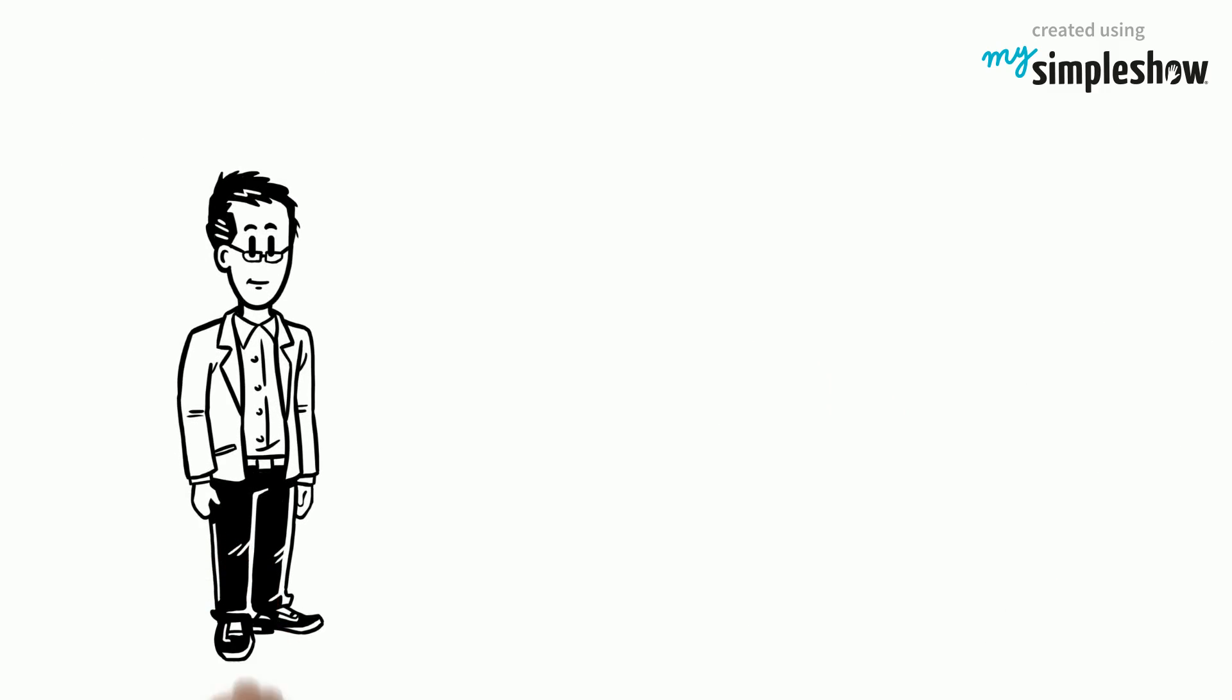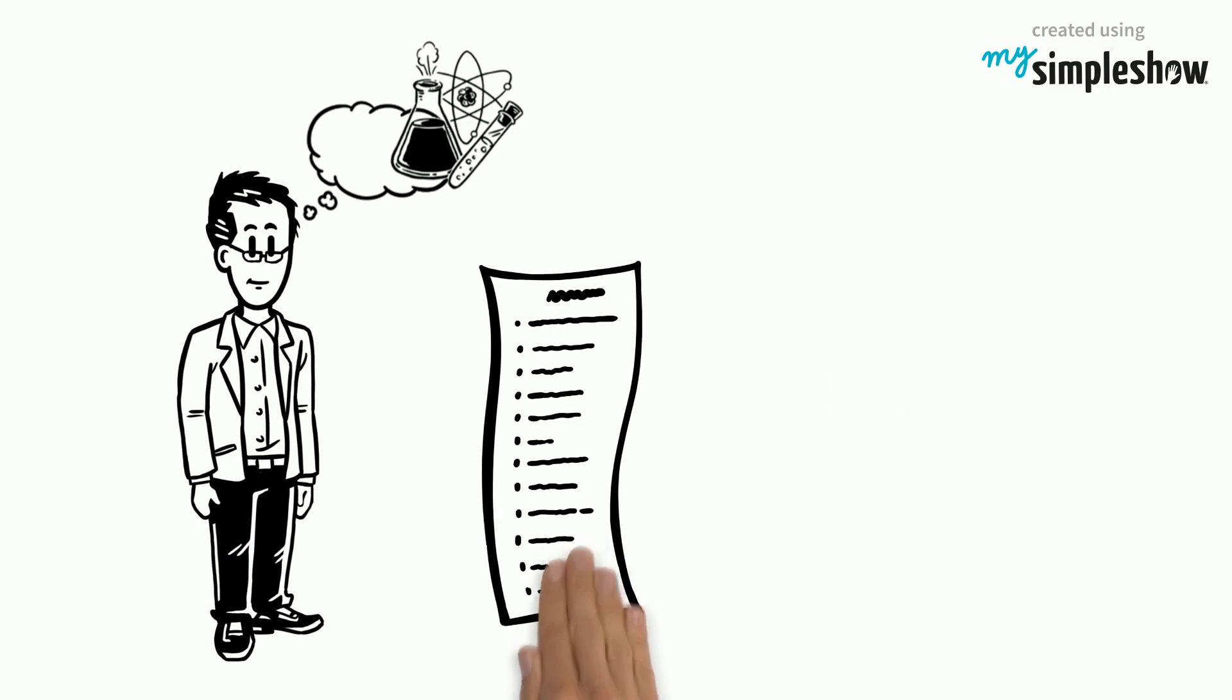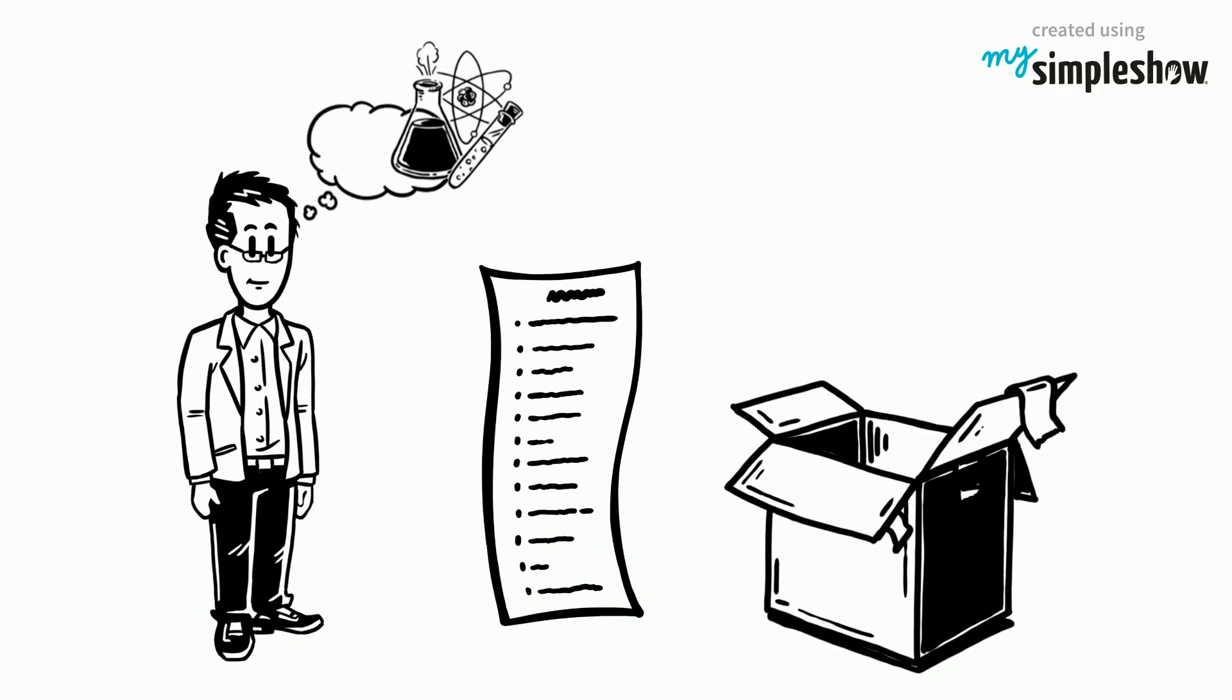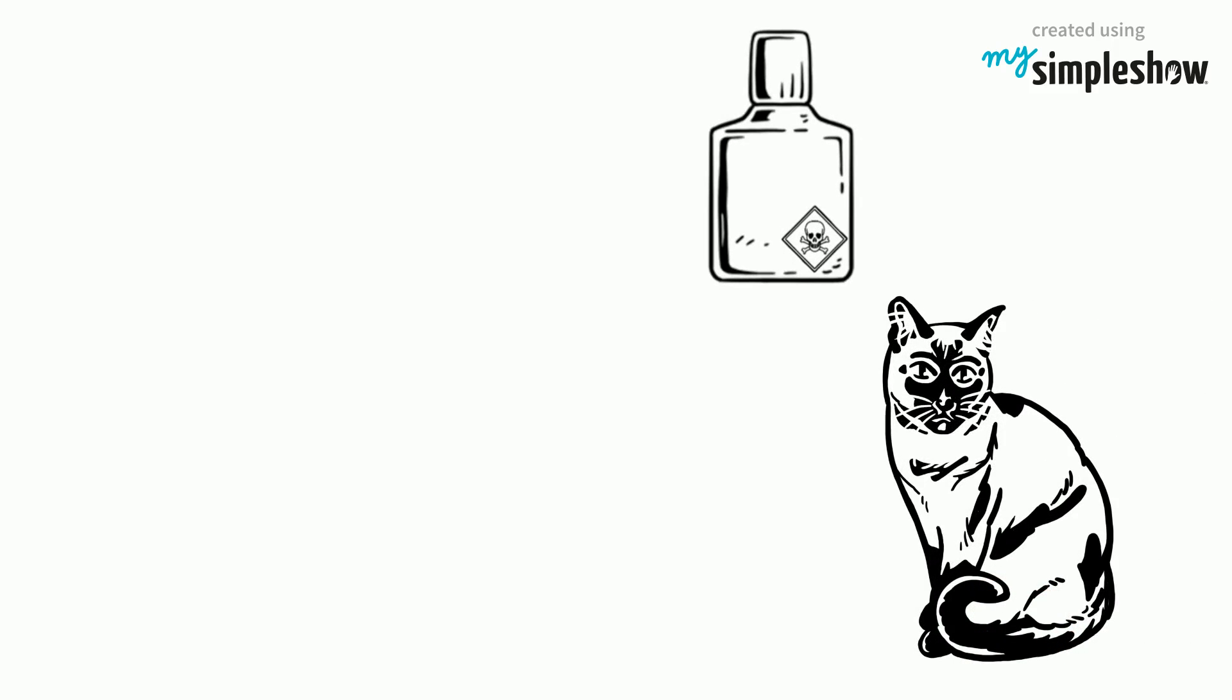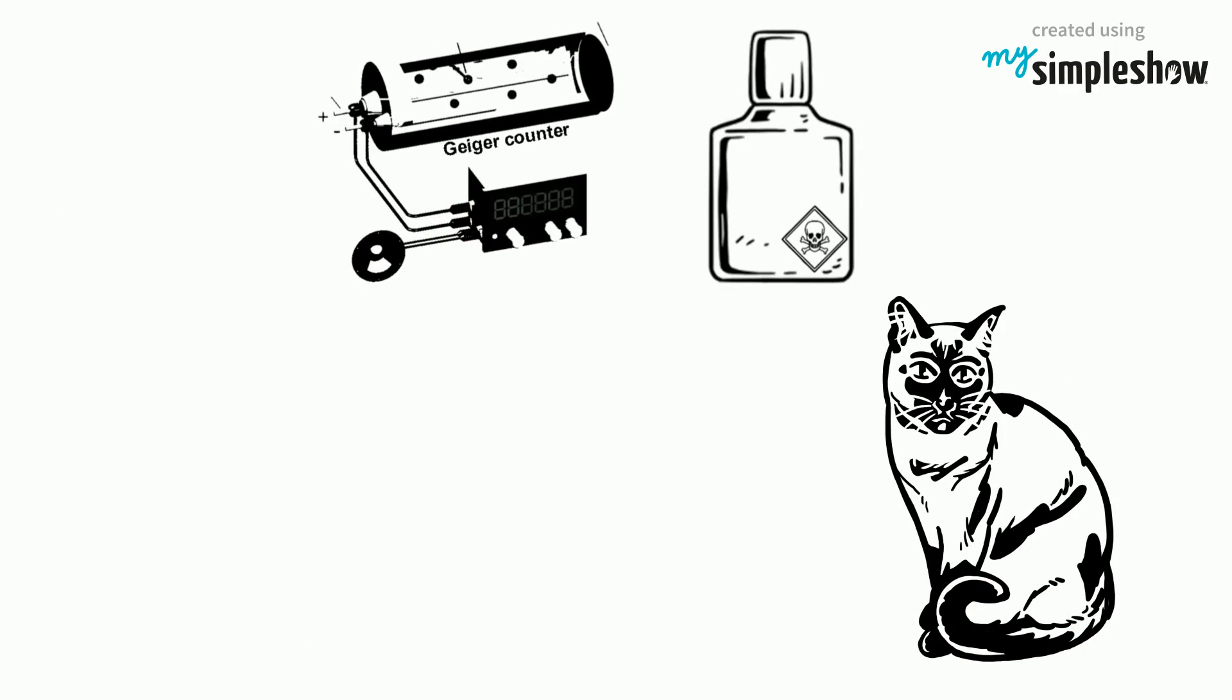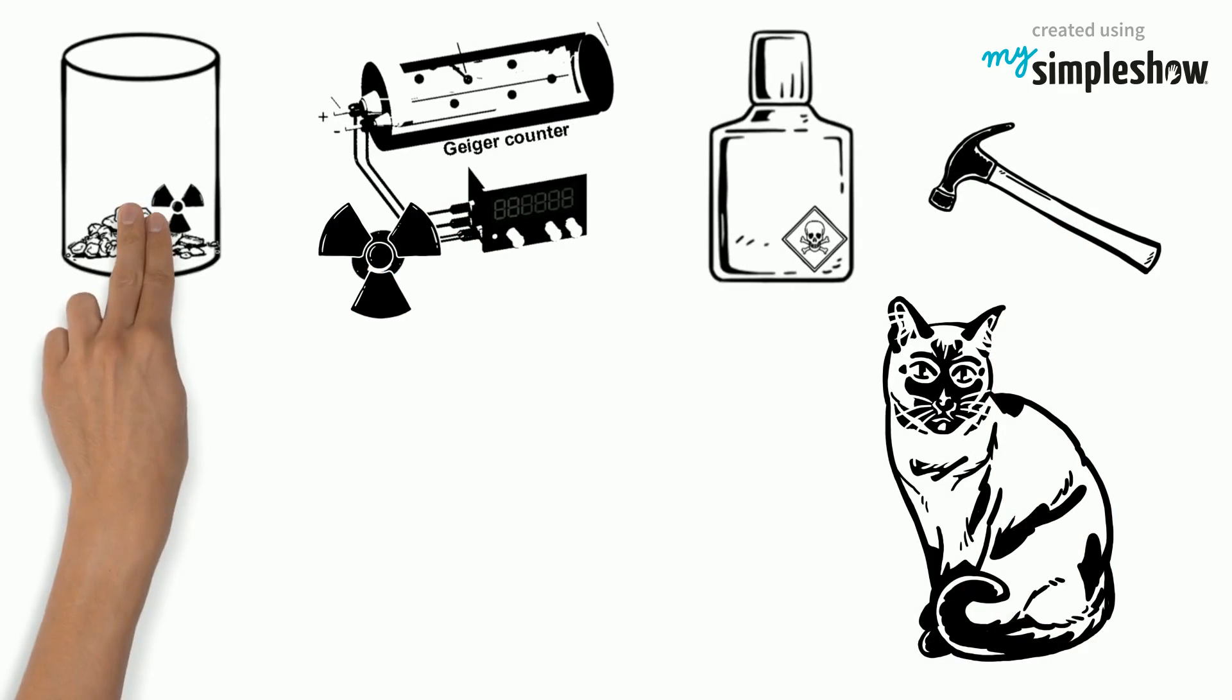In Schrödinger's thought experiment, the following are placed in the sealed box: a cat, a flask of poison, an internal monitor like a Geiger counter that detects radioactivity, a hammer, and a radioactive source.